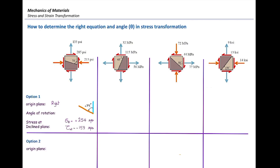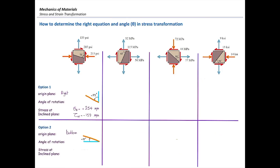For option two, we can start from another surface. If we start from the bottom surface, we need to rotate the element by 15 degrees clockwise in order to get to that plane. And because we have started from the bottom surface, we are going to use sigma_t.